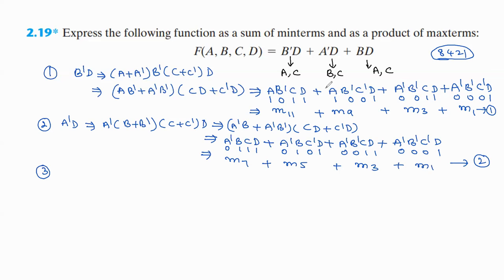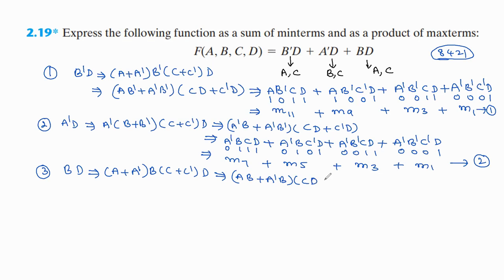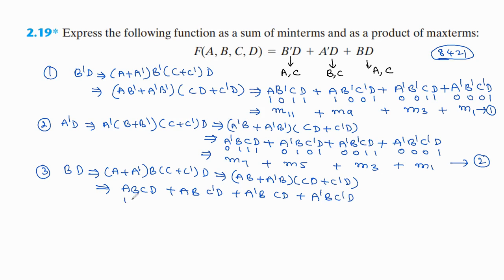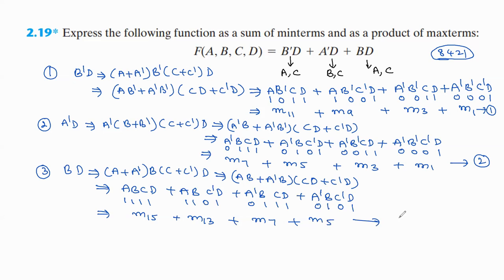For the third product term bd, the missing variables are a and c. So bd multiplied by (a + a') and (c + c') gives abcd, abc'd, and a'bc'd. Assigning binary values: 1111 = m15, 1101 = m13, 0101 = m5. This gives m15 + m13 + m5 as our third equation.